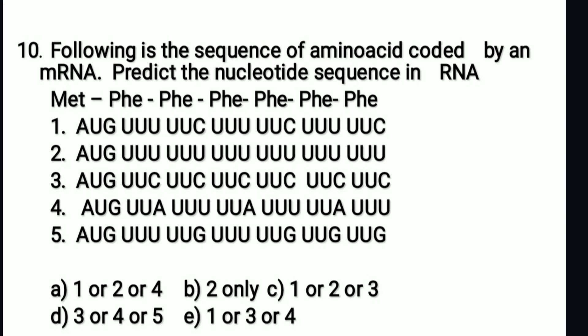Following is the sequence of amino acids coded by an mRNA. Predict the nucleotide sequence in RNA. The right answer is option C: 1 or 2 or 3. This shows degeneracy of the genetic code — the same amino acid is coded by more than one codon.